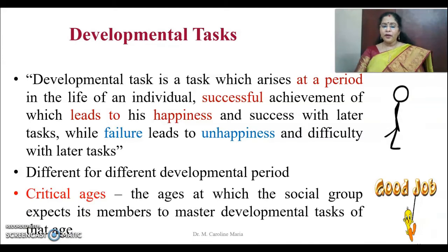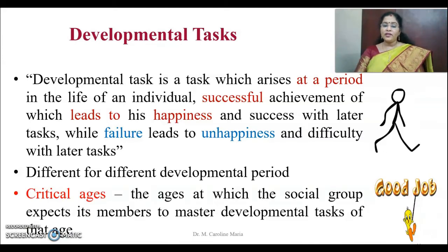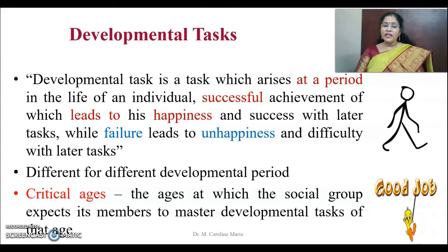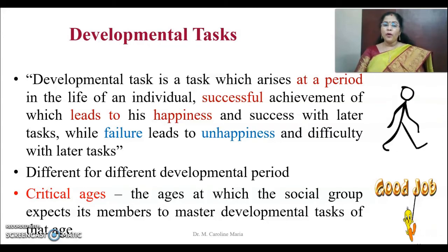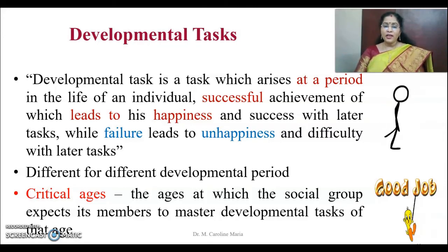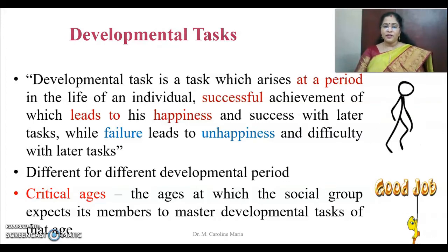Developmental tasks are different for different developmental periods. The critical age is an age at which the social group expects its members to master the developmental task of that age. Each age, every person is expected to overcome their developmental task. For instance, a one-and-a-half-year-old child should be able to stand on its own. If the child is unable to stand, there is a developmental problem which needs to be addressed by a physician.